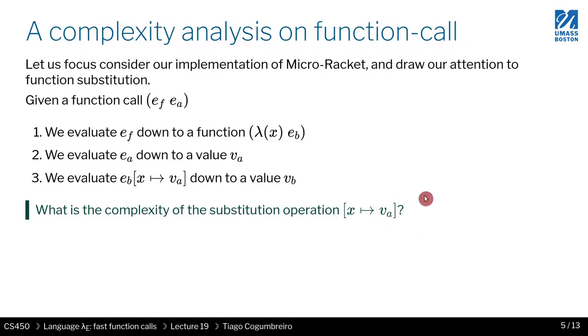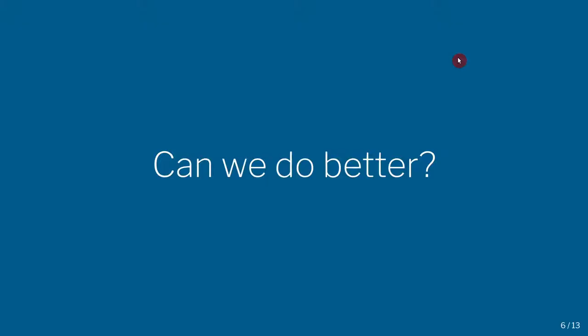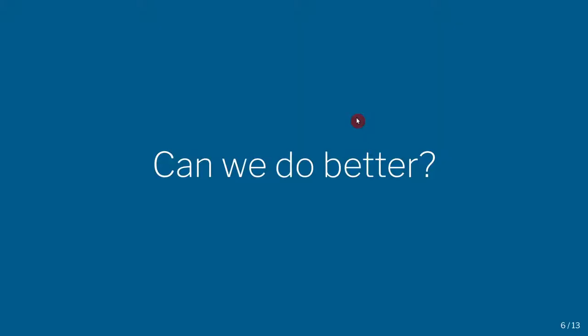So obviously, this is not optimal. The runtime grows linearly on the size of the term being replaced — which in this case is eb, the body of the function. So how can we do this better? How can we improve this idea?